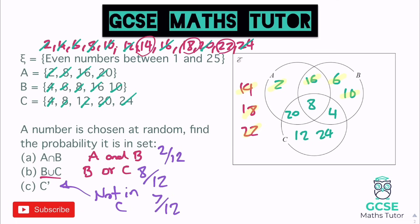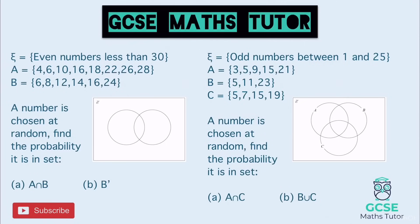I've got a couple of practice questions for you to have a go at — they're very similar in structure to the two we've just gone over, just with different numbers. Fill them all in, then have a look at the probability questions. Remember: ∩ means 'and', ∪ means 'or', and a dash next to a letter means 'not in' that set. Pause the video and have a go.